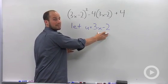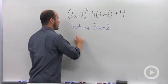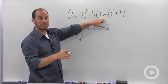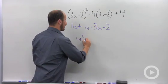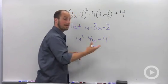By saying u is equal to 3x minus 2, I can then go back to this problem. 3x minus 2 squared just becomes u squared, minus 4 times 3x minus 2 just becomes minus 4u, and then the plus 4 is left on the end.